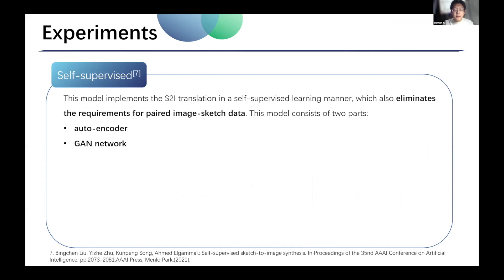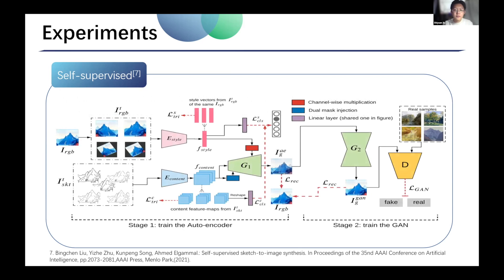The third model is a self-supervised sketch-to-image synthesis method, which implements sketch-to-image translation in a self-supervised learning manner, eliminating the requirement for paired data. This model consists of two parts: the first is an auto-encoder, which decouples the content and style from sketch and RGB image to synthesize an image with sketch content and RGB image style. The second part is a GAN network used to refine the details of the synthesized image. The TOM model we used is also proposed in this paper.